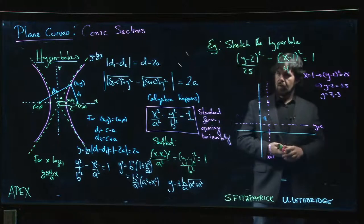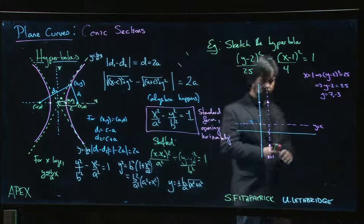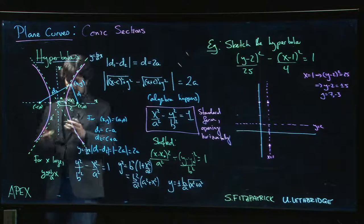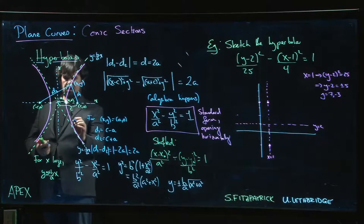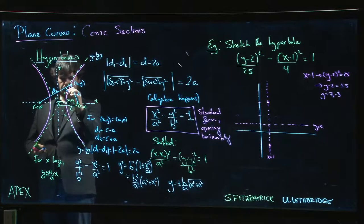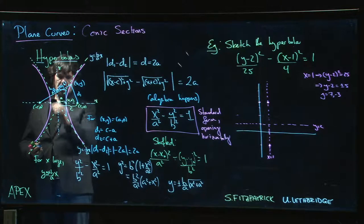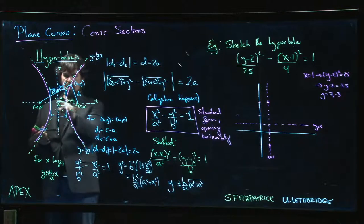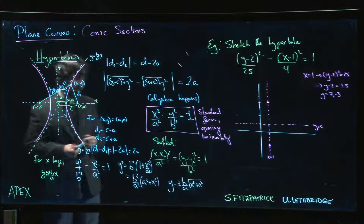We have ±(b/a)·x, but we need to account for the shift. When x = a, y = ±b. So we get the point (a, b) and (a, −b). We can draw in a box, and the asymptotes go through the corners of that box — going a units either side of the center horizontally, and b units up and down from the center vertically.